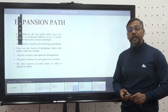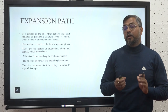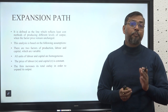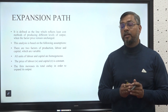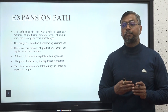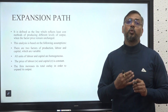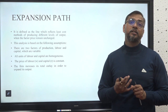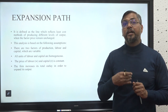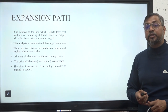Another usage of isoclines is seen in the case of an expansion path. An expansion path is defined as a line that gives us the least cost methods of producing different levels of output when the prices of factors of production are unchanged. When the producer is looking to maximize production, they take help of two things: the iso cost line and the isoquant. Different combinations of least cost combinations joined by a line give the expansion path.